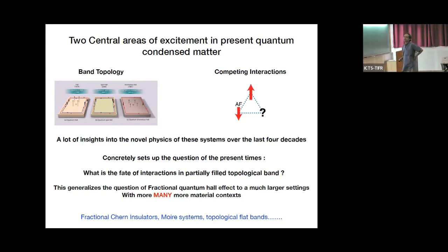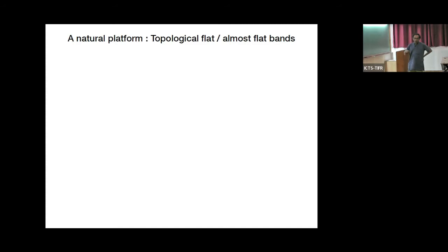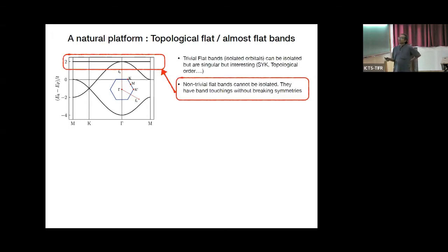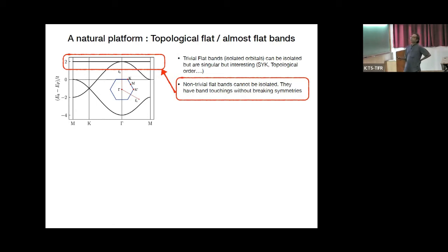A natural platform to look for the interplay of band topology and interactions are topological flat bands or almost-flat bands. These involve a band structure where one band is absolutely flat or has suppressed dispersion. Such flat bands occur in two major categories: trivial flat bands, which stem from isolated orbitals and are harder to deal with but can support interesting phases like non-Fermi liquids or topological order, and non-trivial flat bands, which cannot be isolated.